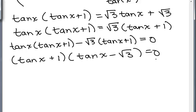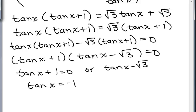Okay, now that I factored it when it's equal to 0, I set each factor equal to 0. So tan x equals -1 or tan x equals √3.